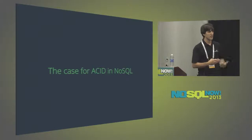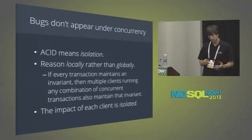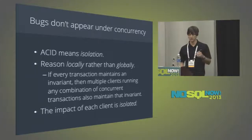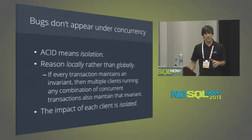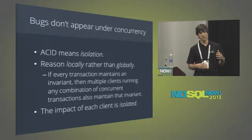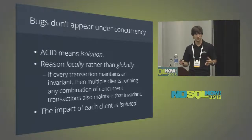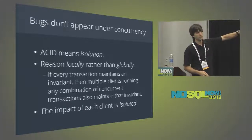Let me make the case for having ACID in NoSQL. The biggest thing about ACID to me is isolation. The biggest thing about isolation is that bugs don't appear under concurrency. This is a really key piece of technology that allows you to reason locally about your code rather than globally. When you have transactional isolation being enforced by the database layer, it means that as long as your transaction maintains the global invariants in the code that you want, then any number of clients running concurrent transactions will maintain that invariant globally, and the impact of each client is isolated.